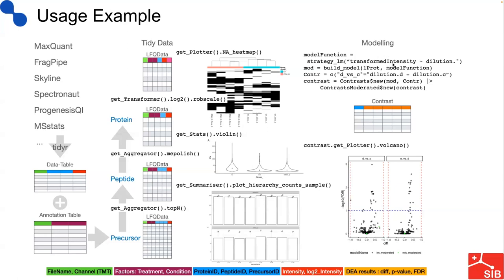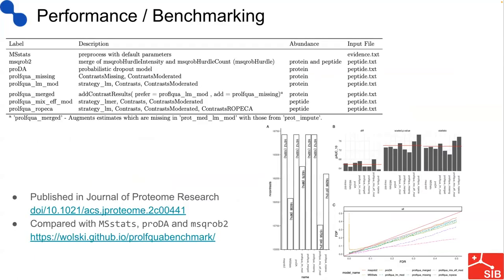Finally, to specify the model, one would use the formula interface, then fit the model and specify the comparisons among the groups one wants to test. Then run the tests. By running the tests, we obtain an instance of the contrast class, which implements methods for plotting and visualizing the results. For instance, a volcano plot, which is a plot of the false discovery rate as a function of the differences among groups.